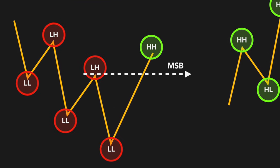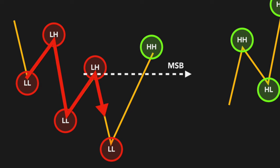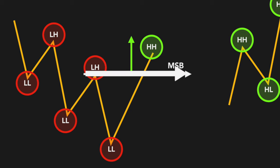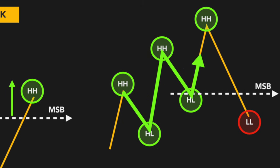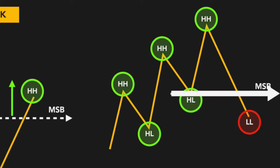Let's remember basic MSB. As you can see, when we are in a downtrend, the moment we break the final lower high to the upside, that is our market structure break. Vice versa, in an uptrend, the moment we break the last higher low to the downside, that is our market structure break.